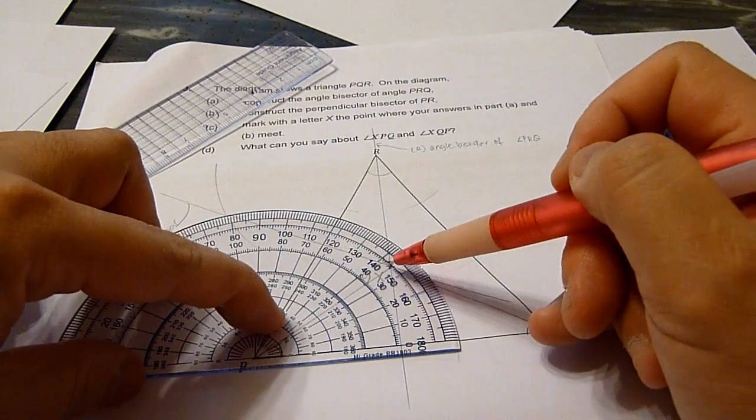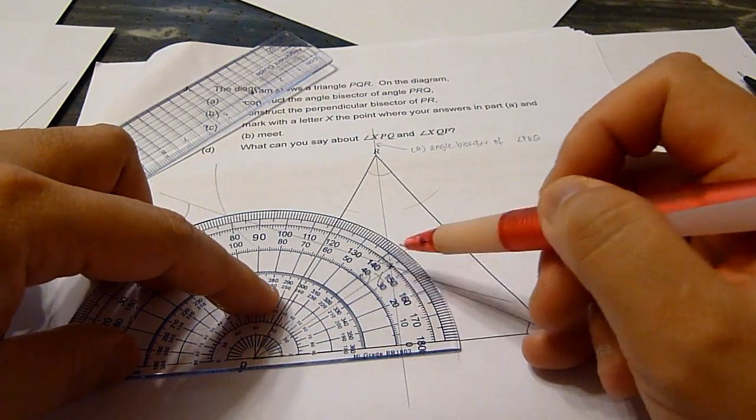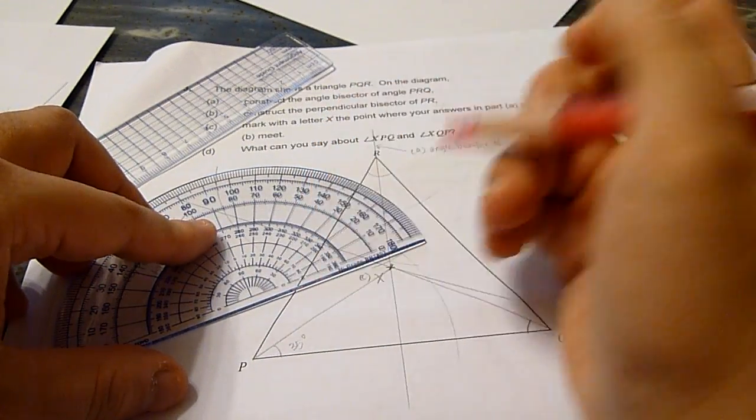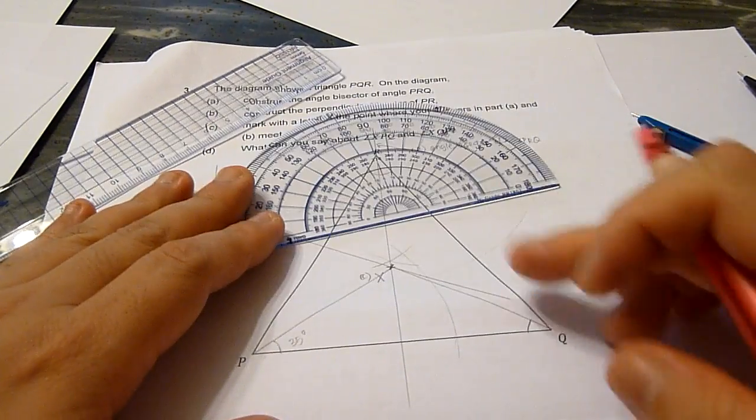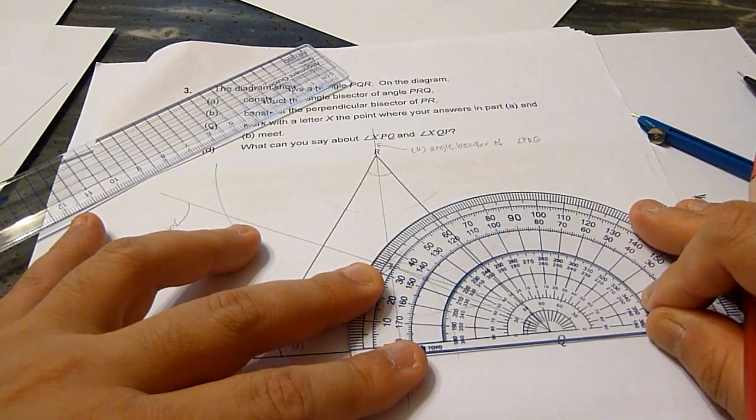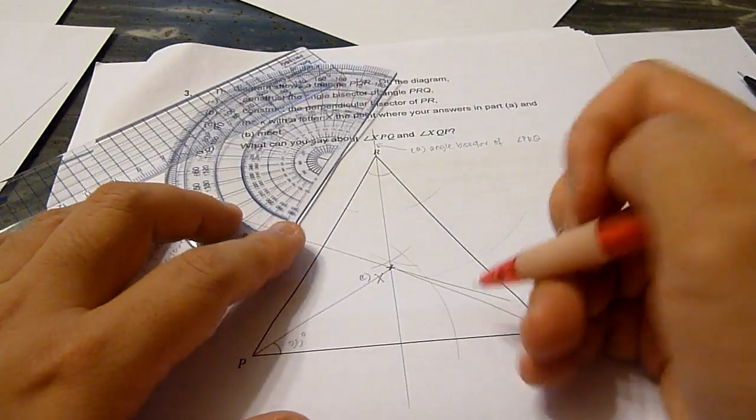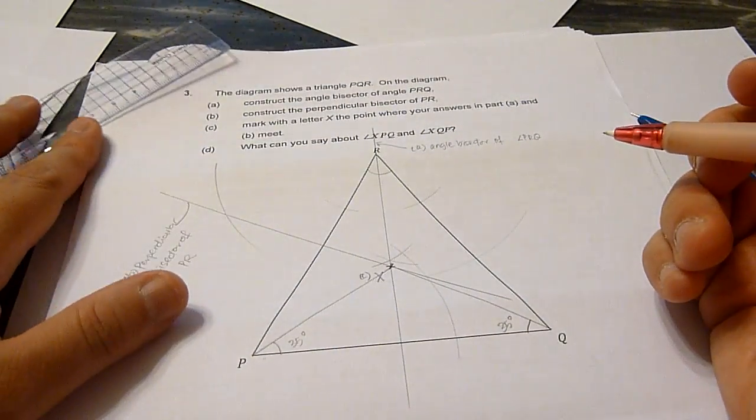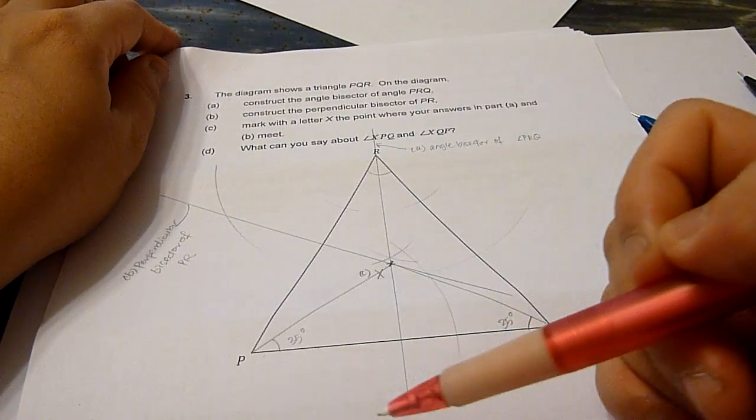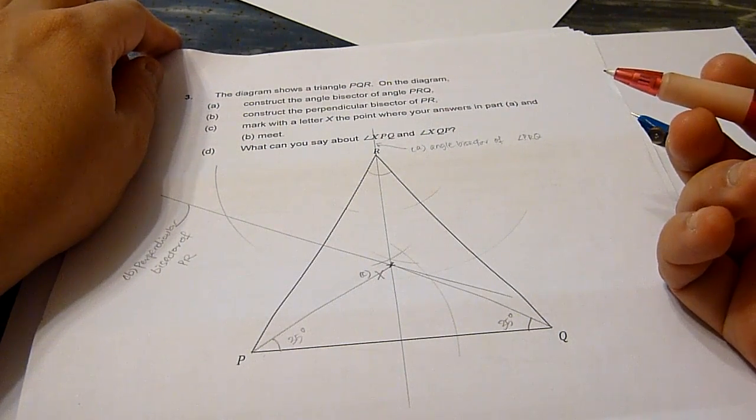Angle XQP is 35 degrees, and angle XPQ also measures 35 degrees. So the two angles are the same and in fact triangle XPQ is an isosceles triangle.